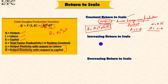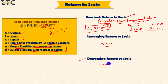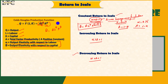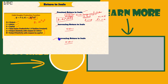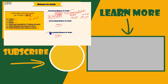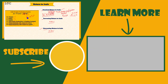Increasing return to scale case: what happens when alpha plus beta is greater than 1. The third case is decreasing return to scale: what happens when alpha plus beta is less than 1. So these were the three cases — constant return to scale, increasing return to scale, and decreasing return to scale — for the Cobb-Douglas production function. I hope you all have understood it.